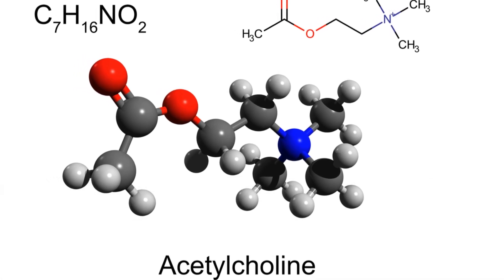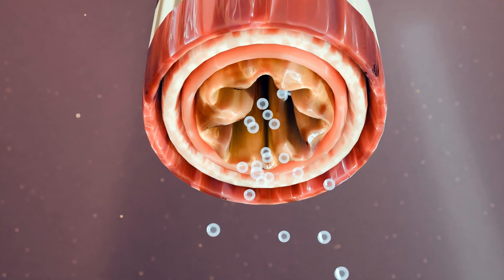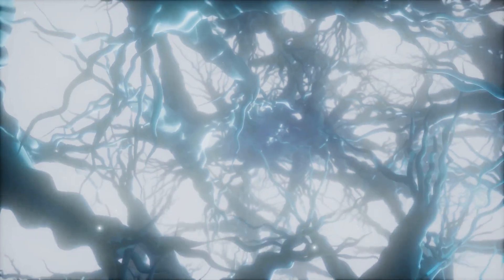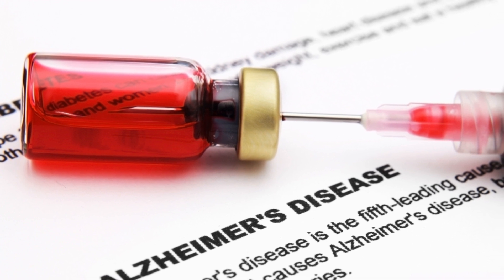First up is acetylcholine, often abbreviated as ACh. This neurotransmitter is like the conductor of an orchestra, playing a crucial role in muscle movement, memory, and learning. It's also linked to Alzheimer's disease, a condition that affects memory.